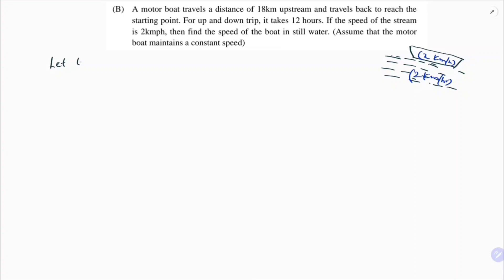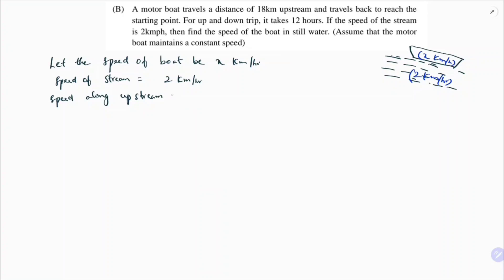Let the speed of the boat be x kilometers per hour. The speed of the stream is given as 2 kilometers per hour. Speed along upstream equals boat speed minus water speed: x minus 2 kilometers per hour. Speed along downstream equals boat speed plus water speed.